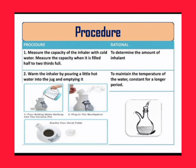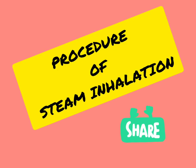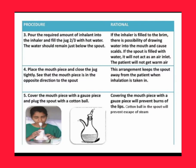Pour the boiling water halfway into the ceramic pot, then plug the mouthpiece. Third step: pour the required amount of inhalant into the inhaler and fill the jug two-thirds with hot water. The water should remain just below the spout.